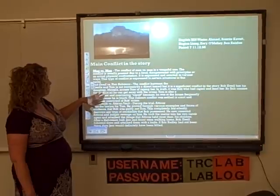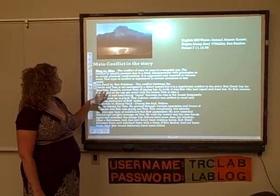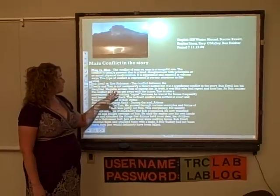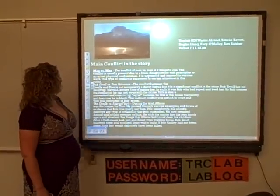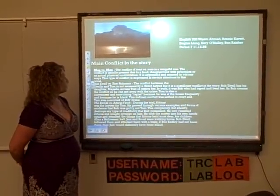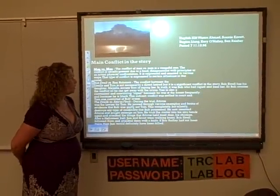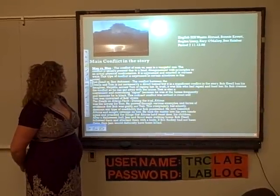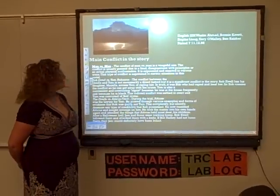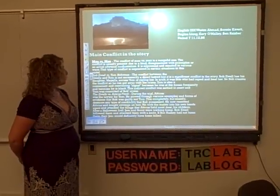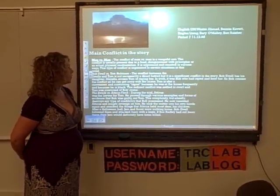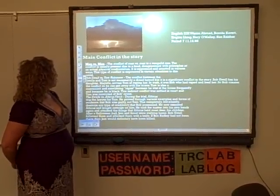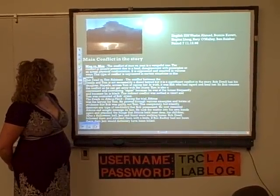One of the big conflicts was between Bob Ewell, who was Mayella's father, and Tom Robinson. The conflict between the Ewells and Tom was not necessarily direct hatred, but a significant conflict. Bob had his daughter Mayella accuse Tom of raping her. In truth, it was Bob who had raped and beat her, so he created the conflict to get away with the crime.